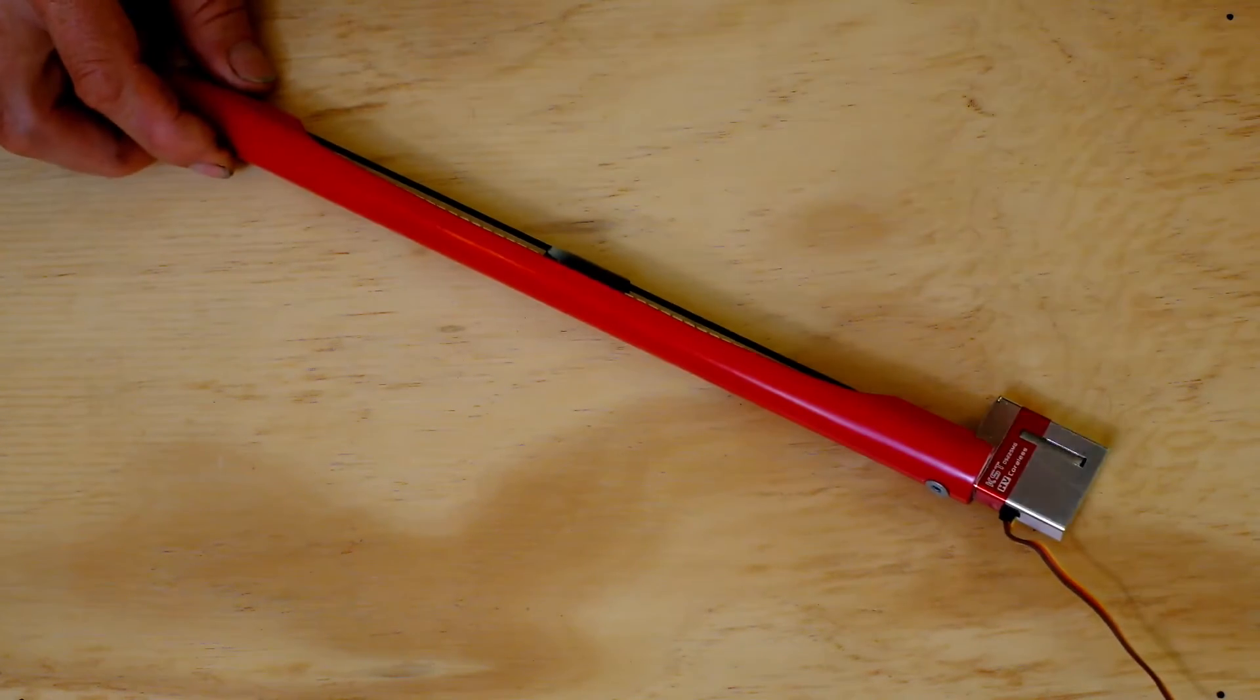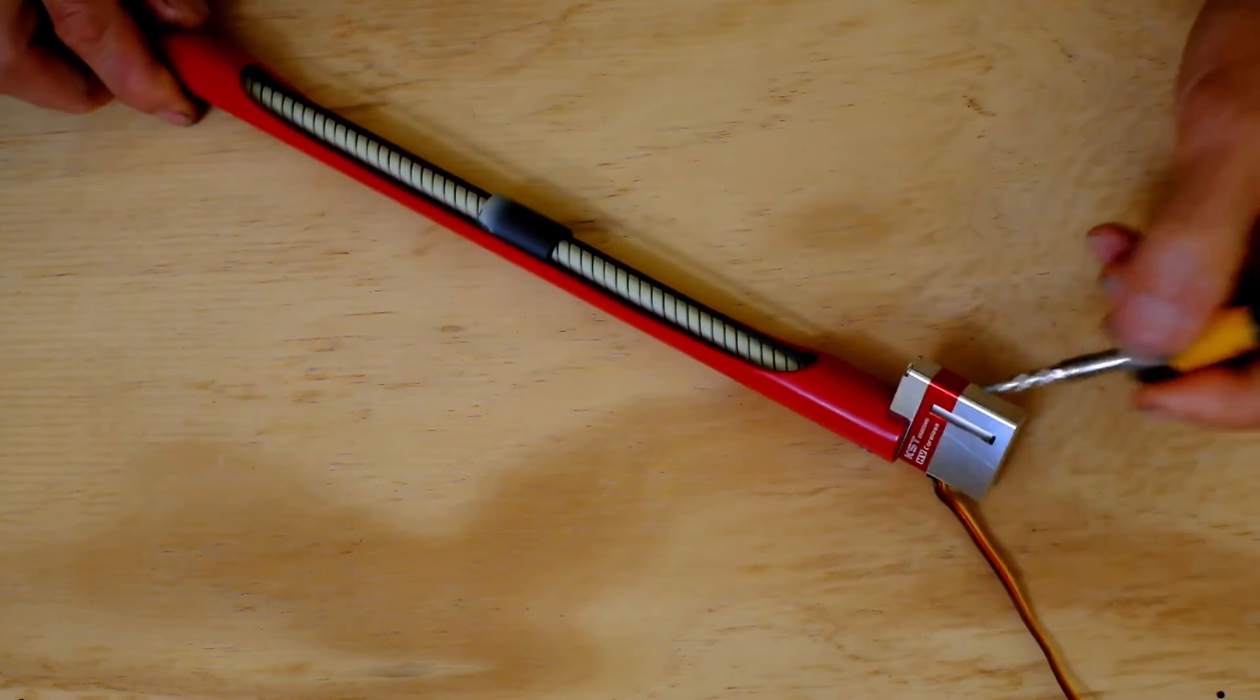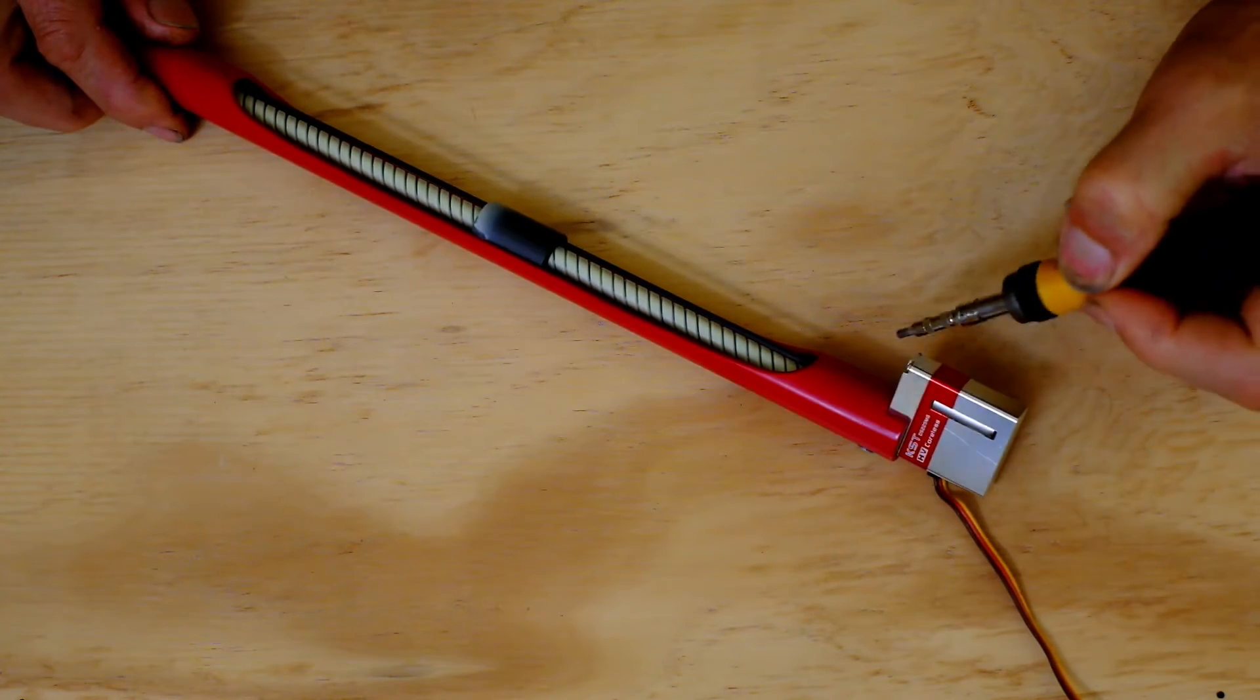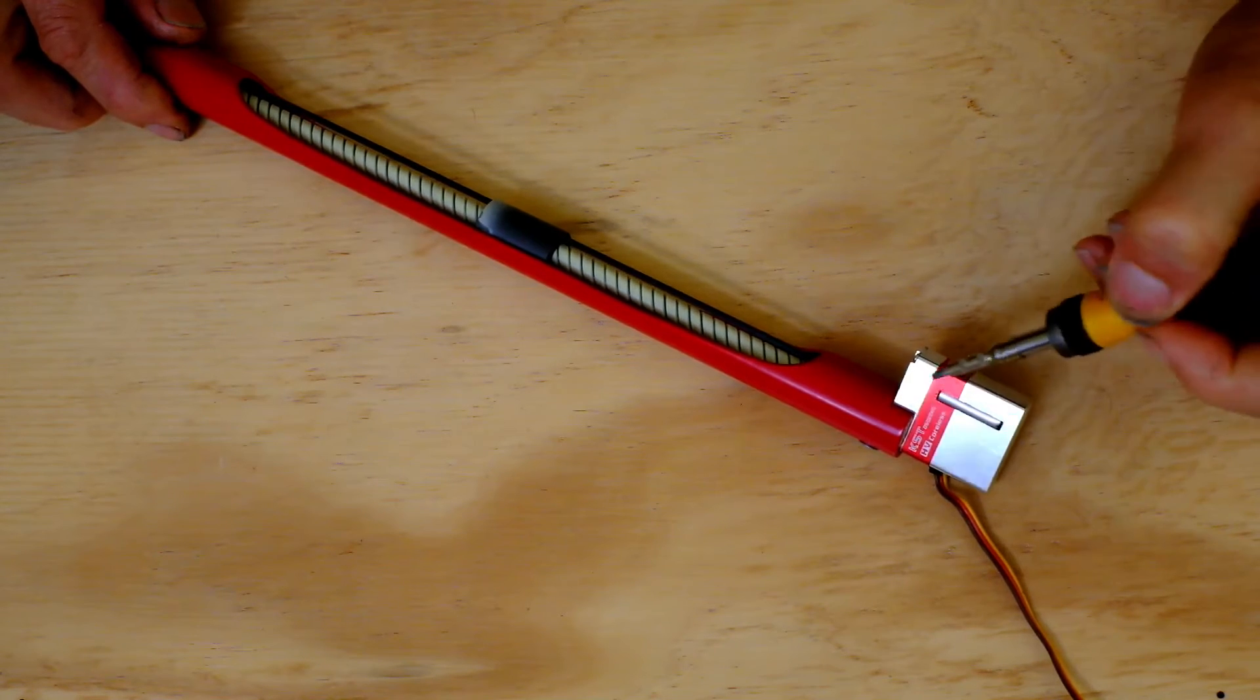So there'd be a two-point attachment through the existing ballast tube. The only modification that would need to be made to the ballast tube is this little section here. You'd need to cut out a little section to receive the servo.